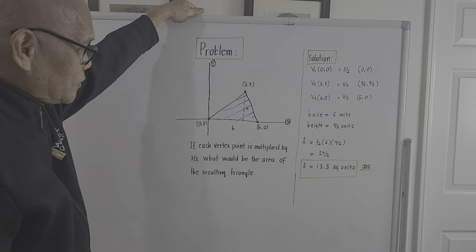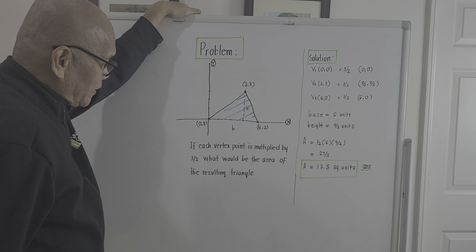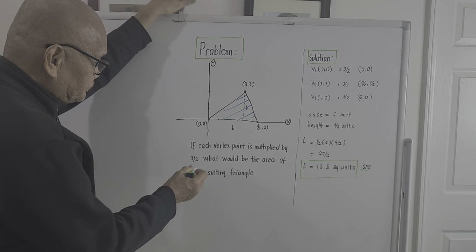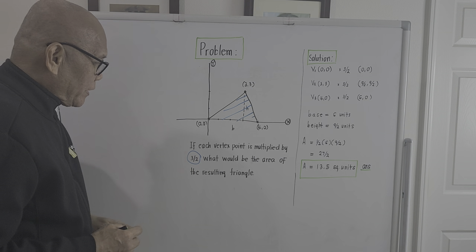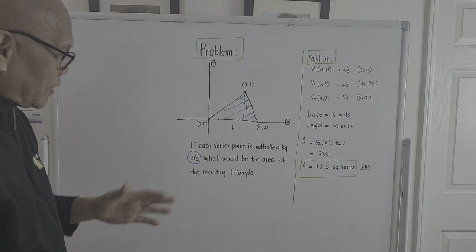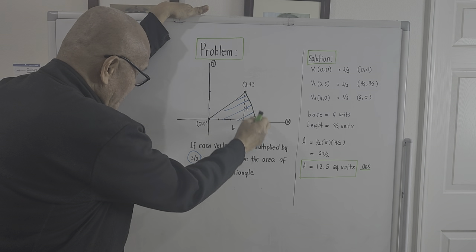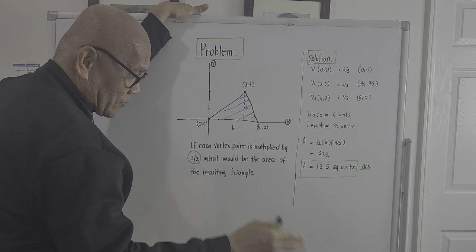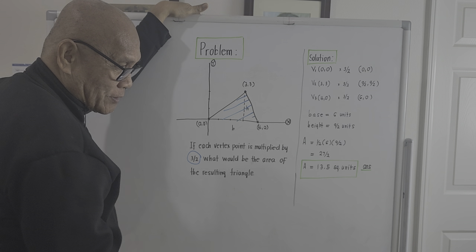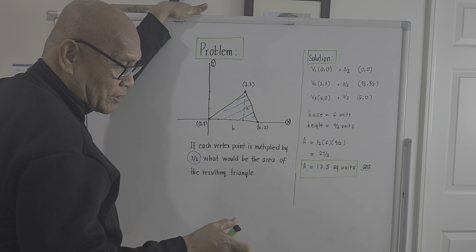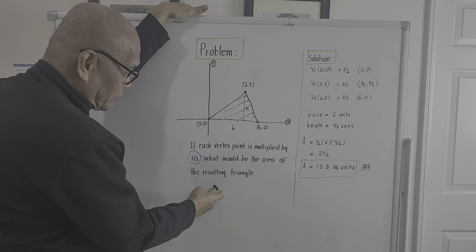Vertex one is at location (0, 0), vertex two is at (3, 3), and vertex three is at (4, 0). The condition of the problem is: if each vertex point is multiplied by three halves, what would be the area of the resulting triangle?